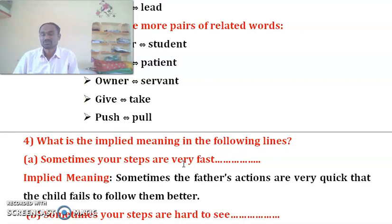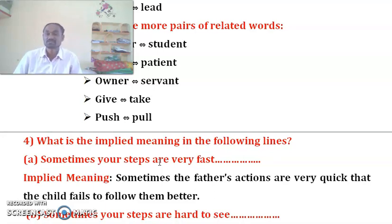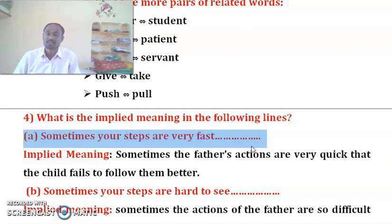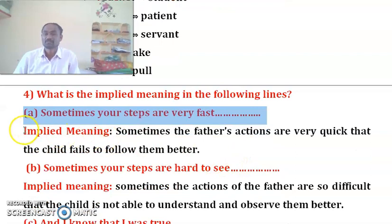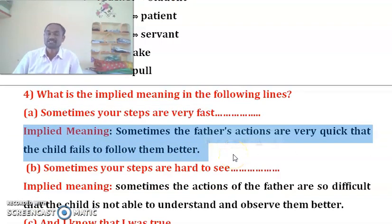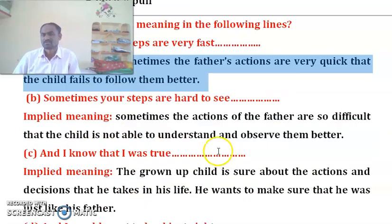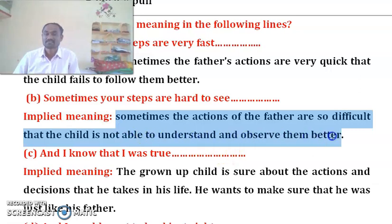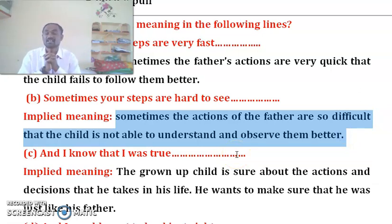One of the most important questions: What is the implied meaning in the following lines? The implied meaning of the first line is that sometimes the father's actions are very quick, so the child fails to follow them. For line two, 'Sometimes your steps are hard to see' — the implied meaning is that sometimes the actions of the father are so difficult that the child is not able to understand and observe them.